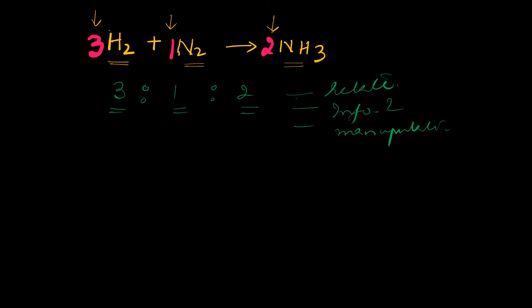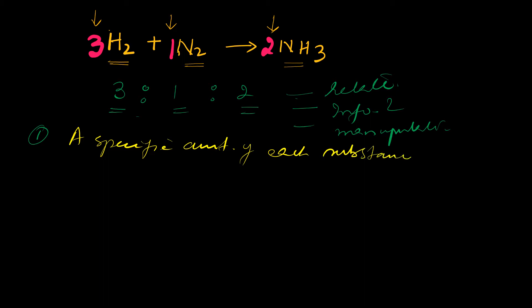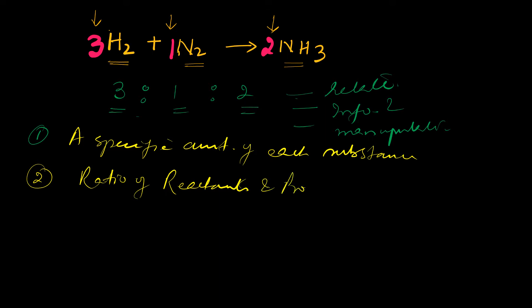In short, how can coefficients be used to quantitatively connect all substances in a reaction? These coefficients can represent: first, a specific amount of each substance, and second, the ratio of reactants and products in the reaction.